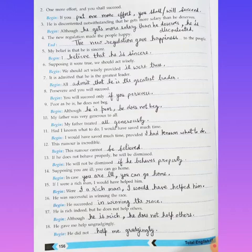Sixteenth: He was successful in winning the race. He succeeded in winning the race. Seventeenth: He is rich indeed, but he does not help others. Answer is: Although he is rich, he does not help others.